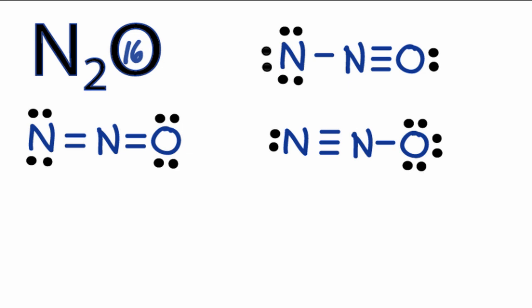For each structure, the atoms have fulfilled their octets and all 16 valence electrons have been used. We need to decide which one is the best structure, and to do so, we're going to look at formal charges.